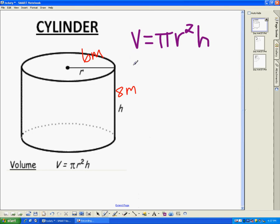So volume is equal to pi r squared h. When we plug it in, we're going to leave pi as pi. We're not going to plug in 3.14. The radius is 6, so it's going to be times 6 squared. And then the height is equal to 8. So volume is equal to pi, 6 times 6 is 36, and then we've got times the height of 8.